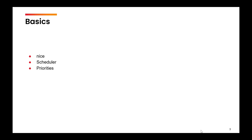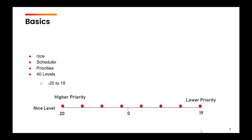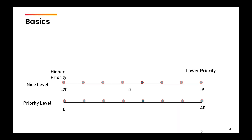The priority levels or nice levels range from minus 20 to 19, so in total there are 40 nice levels in a Linux system. Depending upon the nice level, the process is assigned a priority. Minus 20 is the lowest nice level. Lower the nice level, higher is the priority — this is a common point of confusion, so just remember: lower the nice level, higher is the priority.